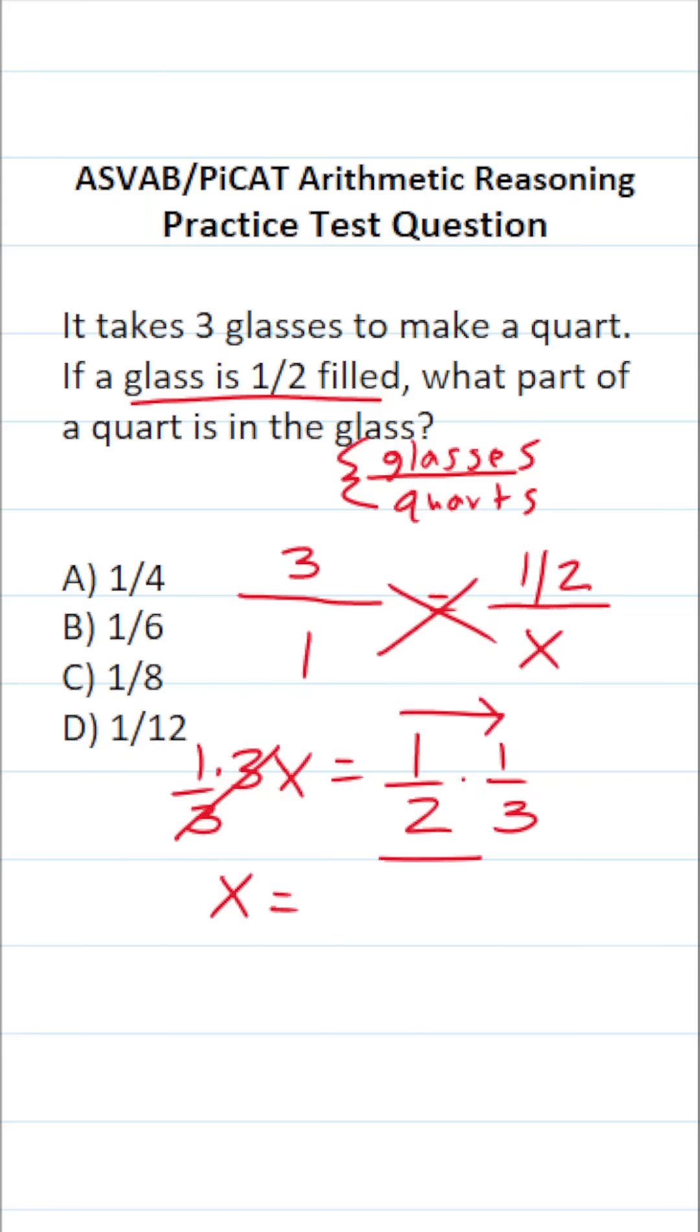When you multiply fractions, you multiply straight across. This becomes one times one, which is one, two times three, which is six.